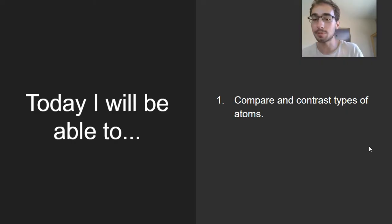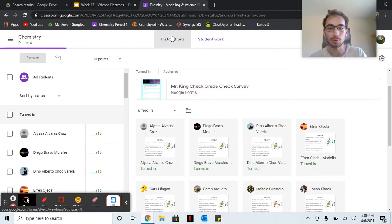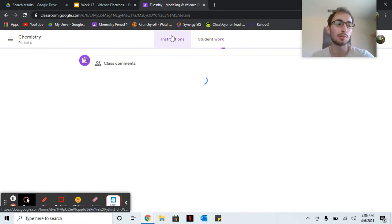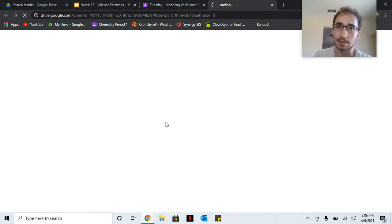Next, today you should be able to compare and contrast different types of atoms. So go to Google Classroom, go to Tuesday and modeling valence electrons.